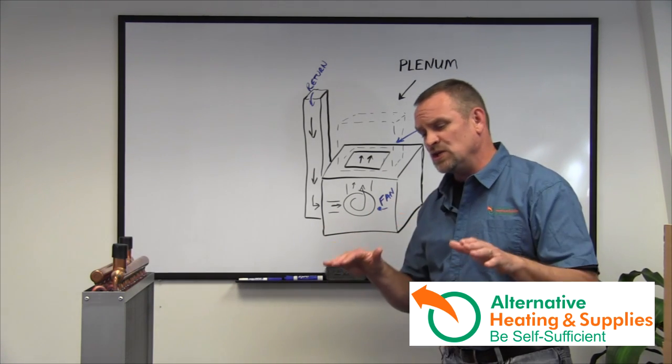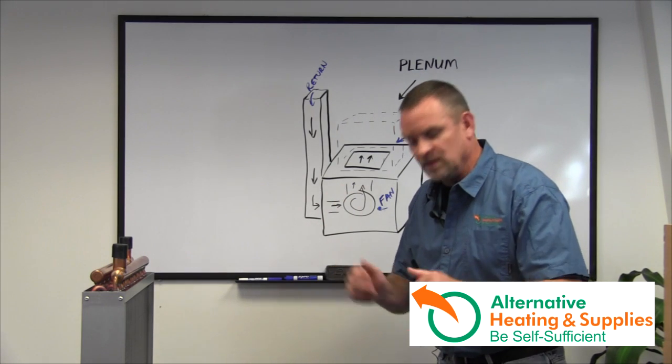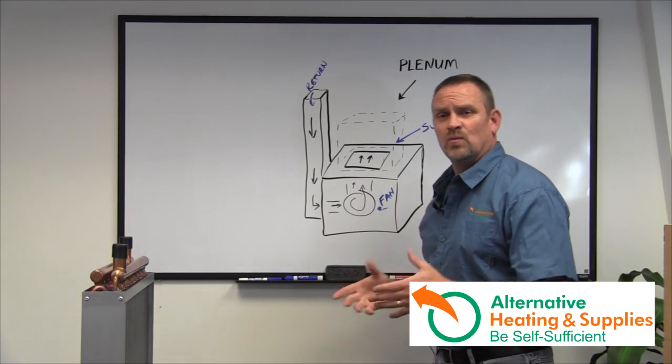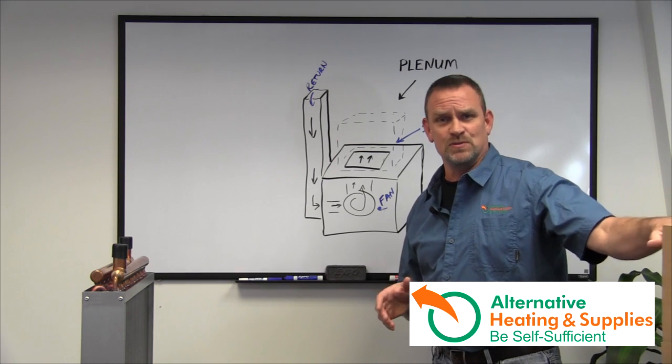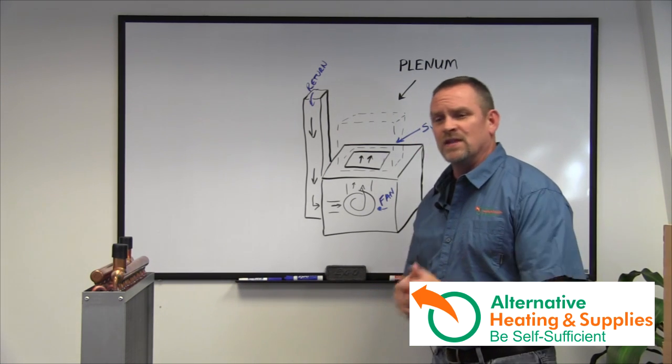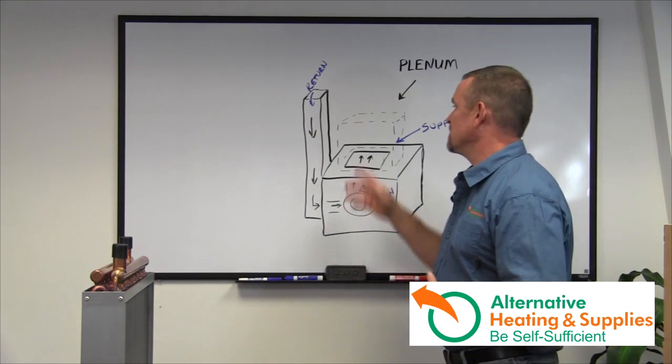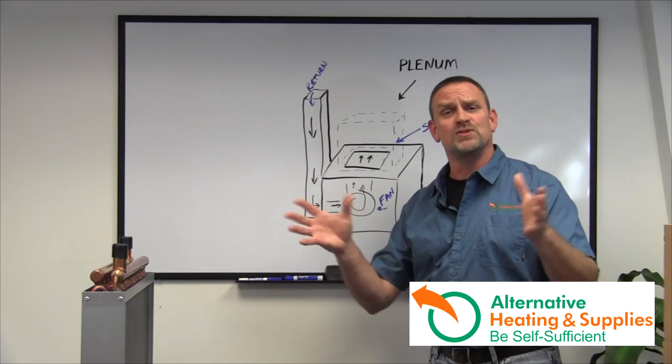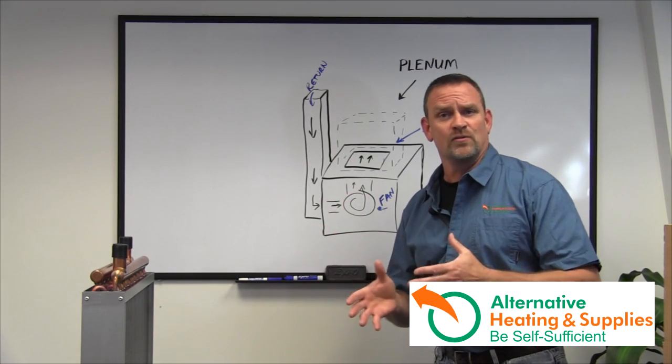So if you actually cut into a plenum and look into the plenum on your furnace you're going to see the hole where the air comes out and it's usually considerably smaller than the plenum itself. And the reason they do that is that they're trying to maximize the size of the plenum to get the most CFM which is air movement through the house.